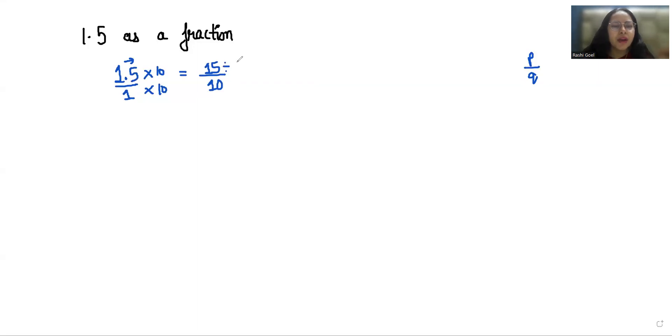So this gives us 3 by 2. This is the fraction form. We can convert it to mixed form as well because the numerator is greater than the denominator.